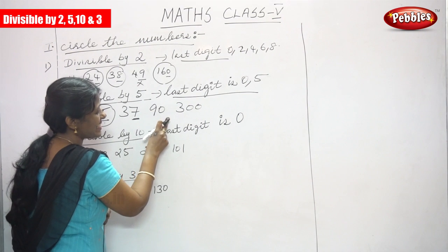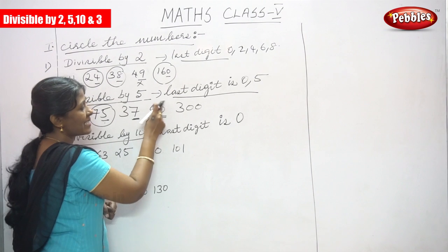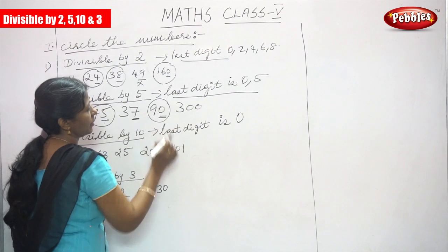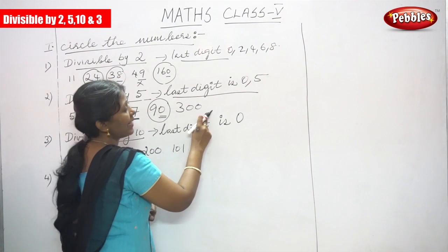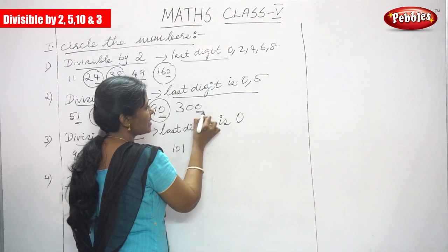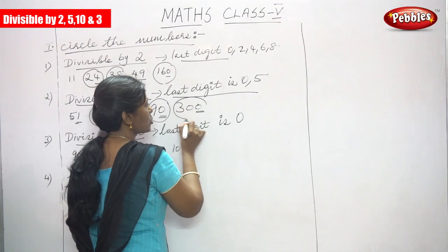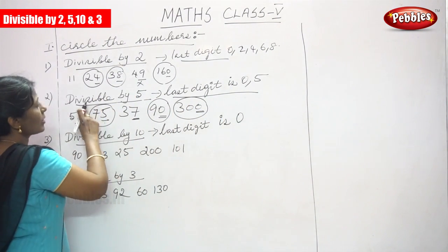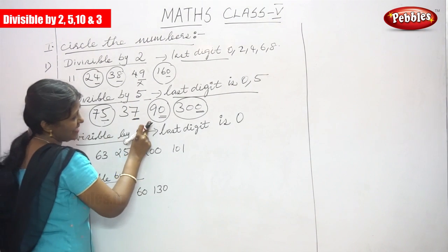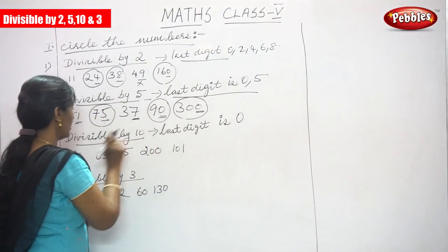Next number is 90 — the last digit is 0. The last digit ends with 0, so it is divisible by 5. Circle the number. The next one is 300 — the last digit is 0, so it is divisible by 5. Circle the number. The numbers divisible by 5 are 75, 90, and 300.